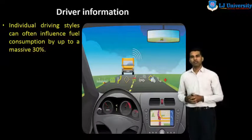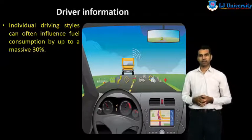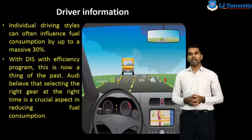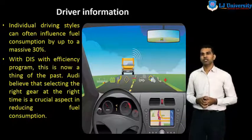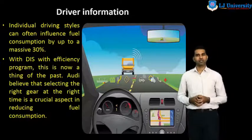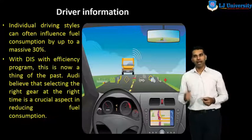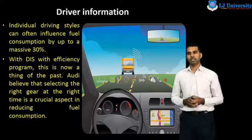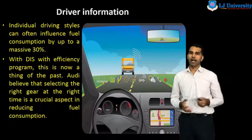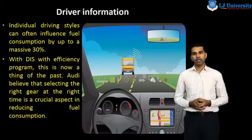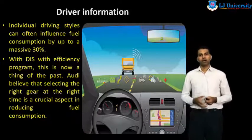Individual driving style can often influence the fuel consumption by up to a massive 30%. With the DIS — that means the driver information system — with the efficiency program, this is now a thing of the past. Audi believes that selecting the right gear at the right time is a crucial aspect in reducing fuel consumption, which can increase the mileage of the car.